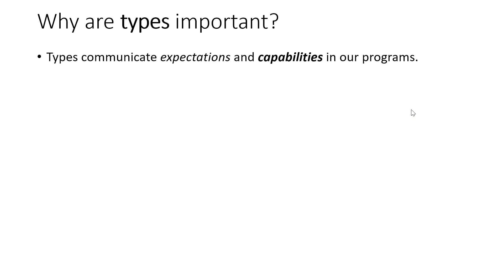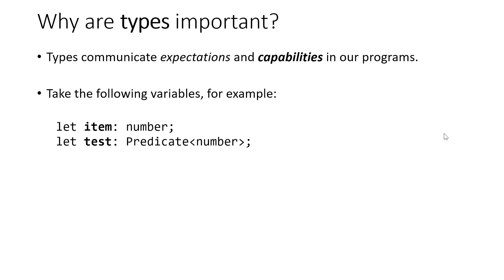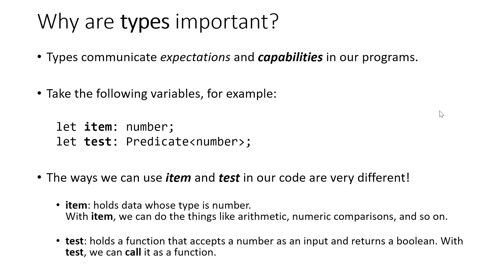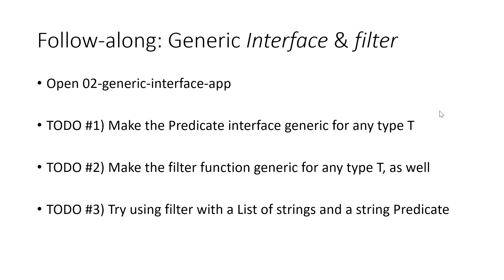Types are important because they communicate the expectations and capabilities in our programs. Consider a variable item of type number and test of type Predicate<number>: with item we can add or subtract other numbers, while with test we know it must be a function that takes a number parameter and returns a boolean — so we could call test as a function or pass it to other functions that expect a predicate.